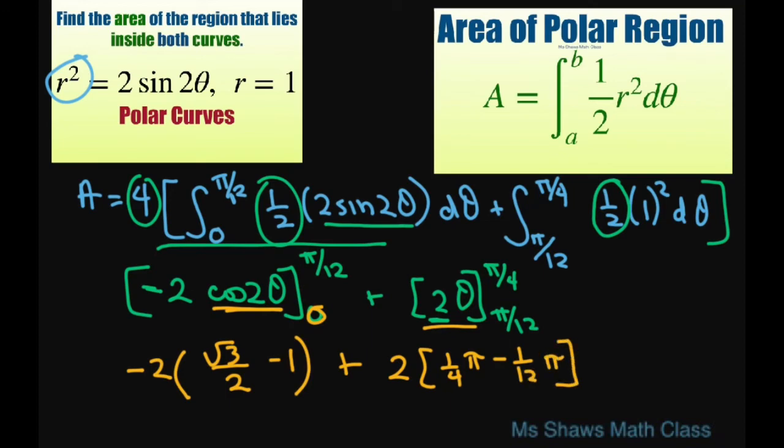So these 2's cancel. We're going to get this equals 2 minus √3 plus π/3. You just add these up. You get the same common denominator and you'll get your π/3.